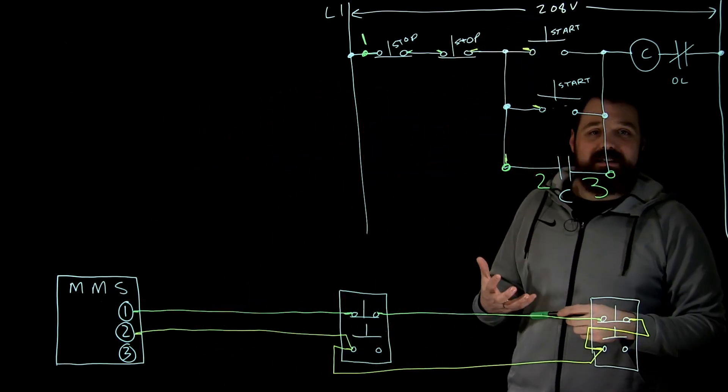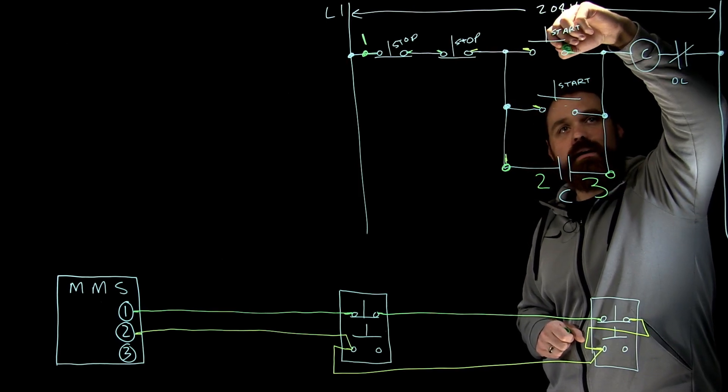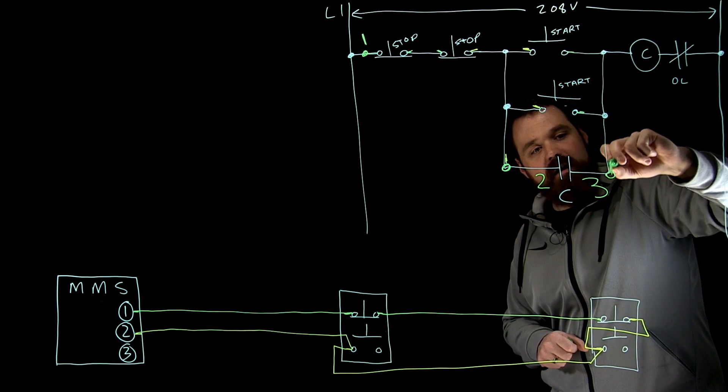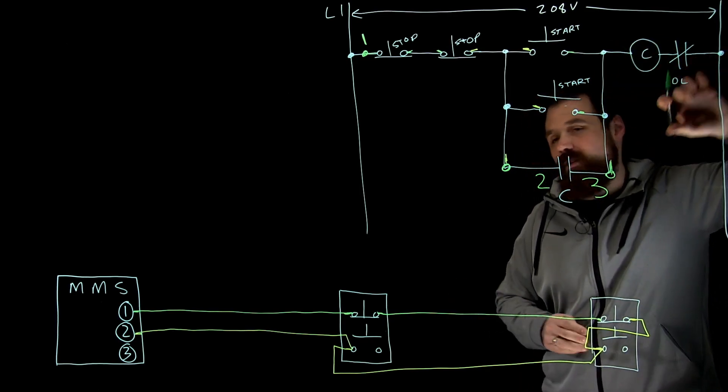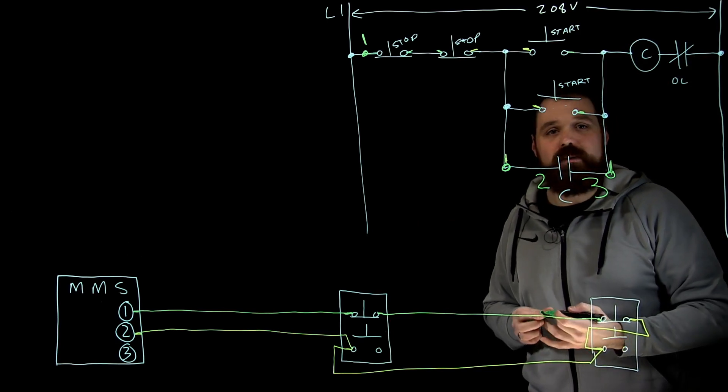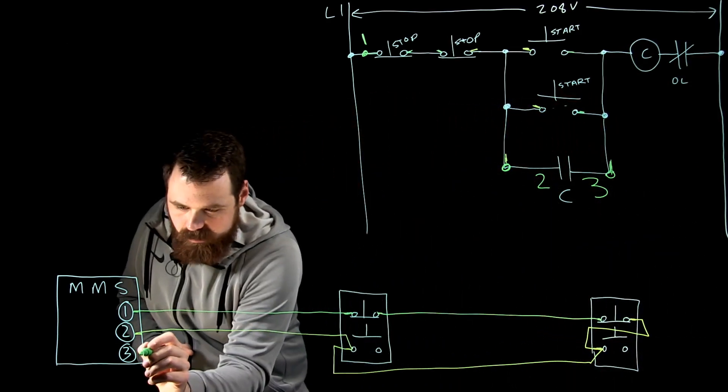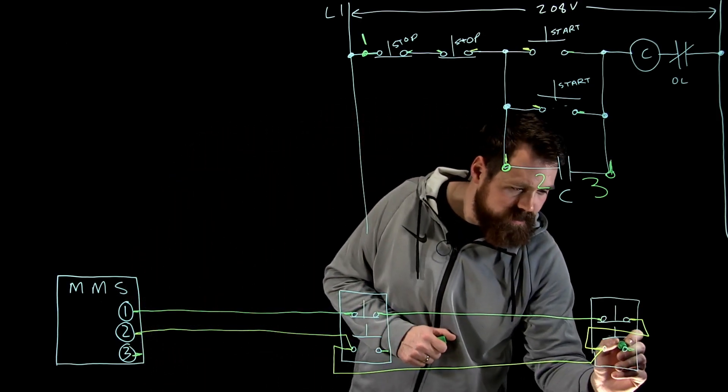Now my very last connection is the connection over here, which will be the right side of my start, the right side of my other start and NEMA three. Keeping in mind from NEMA three through my coil through my overloads is going to be pre-wired for me inside that starter in this case. So I'm going NEMA three, right side of start and right side of start.